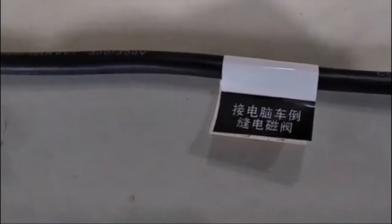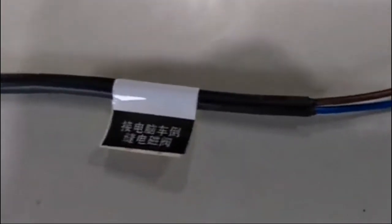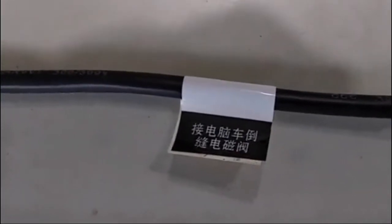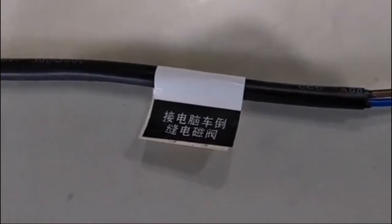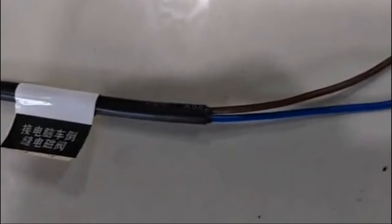The third cable is for auto-reverse sewing synchronizer. When the machine has auto-reverse sewing synchronizer, you put this cable on.